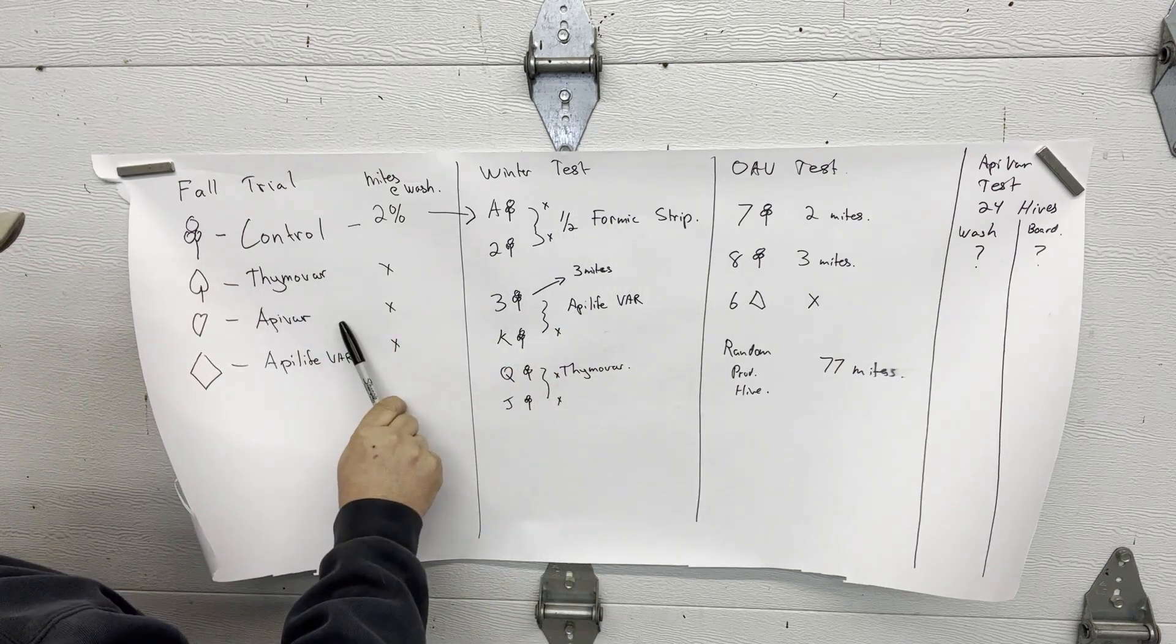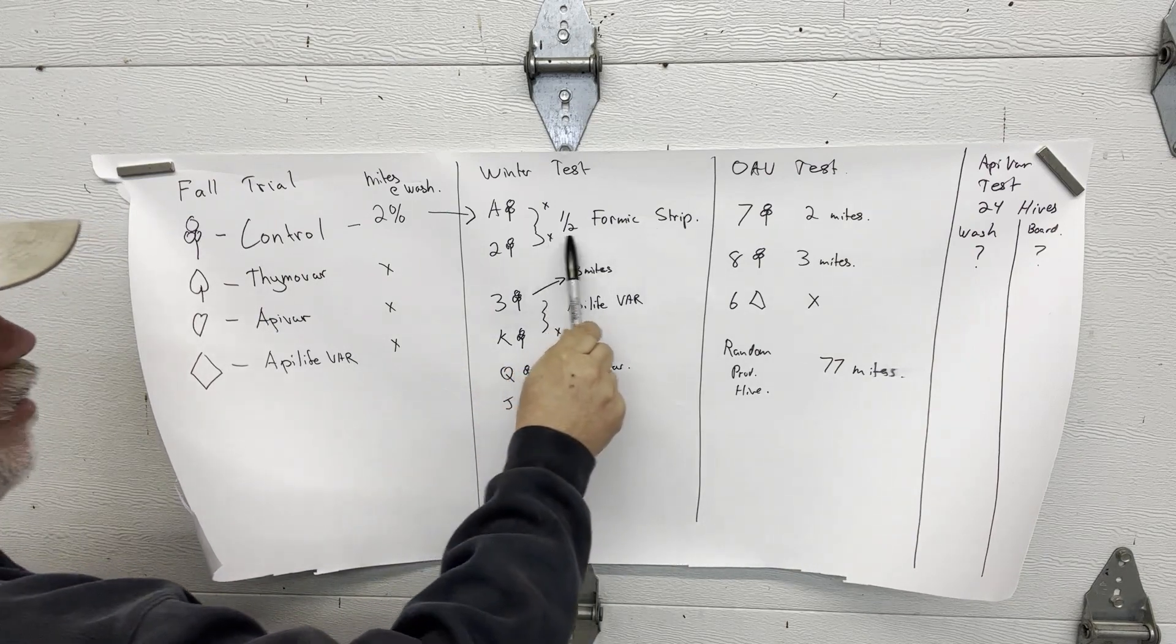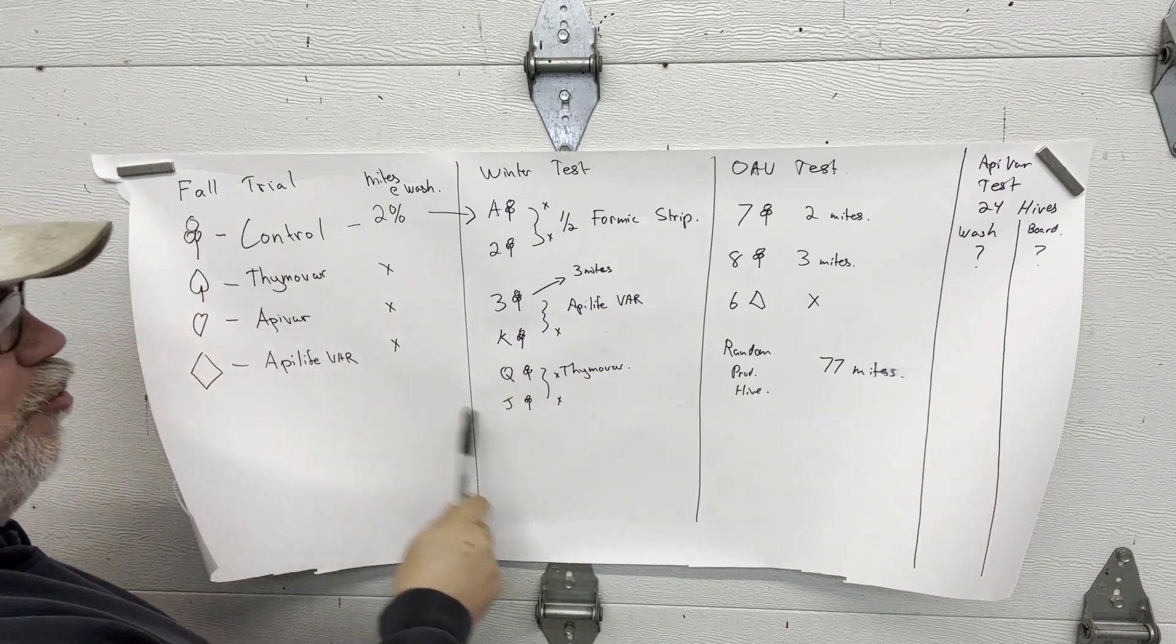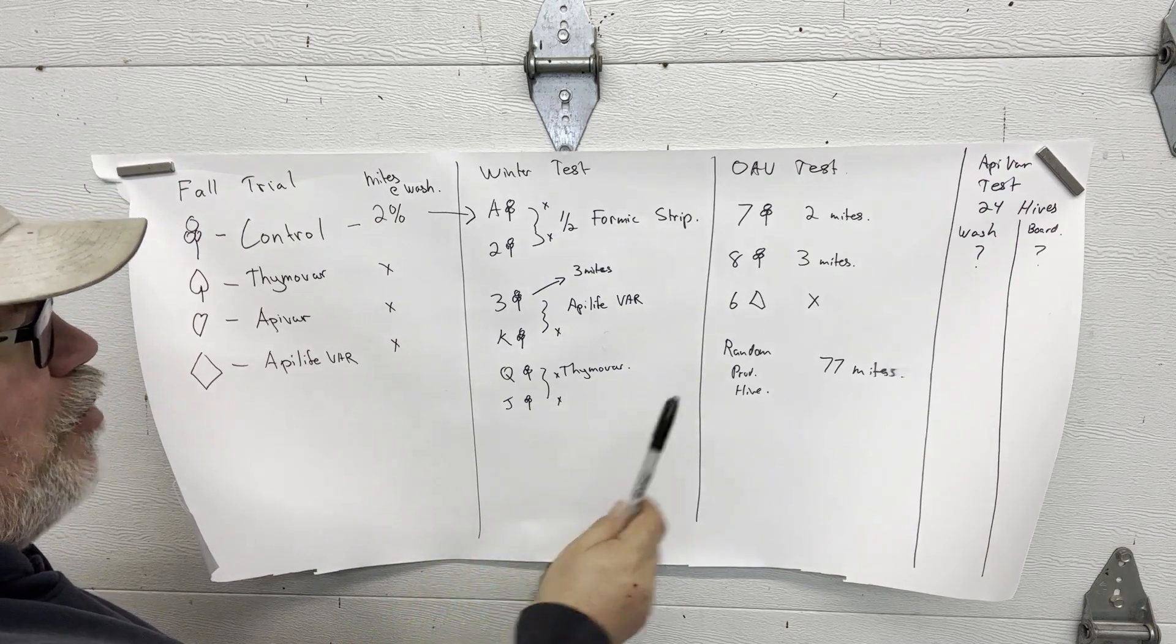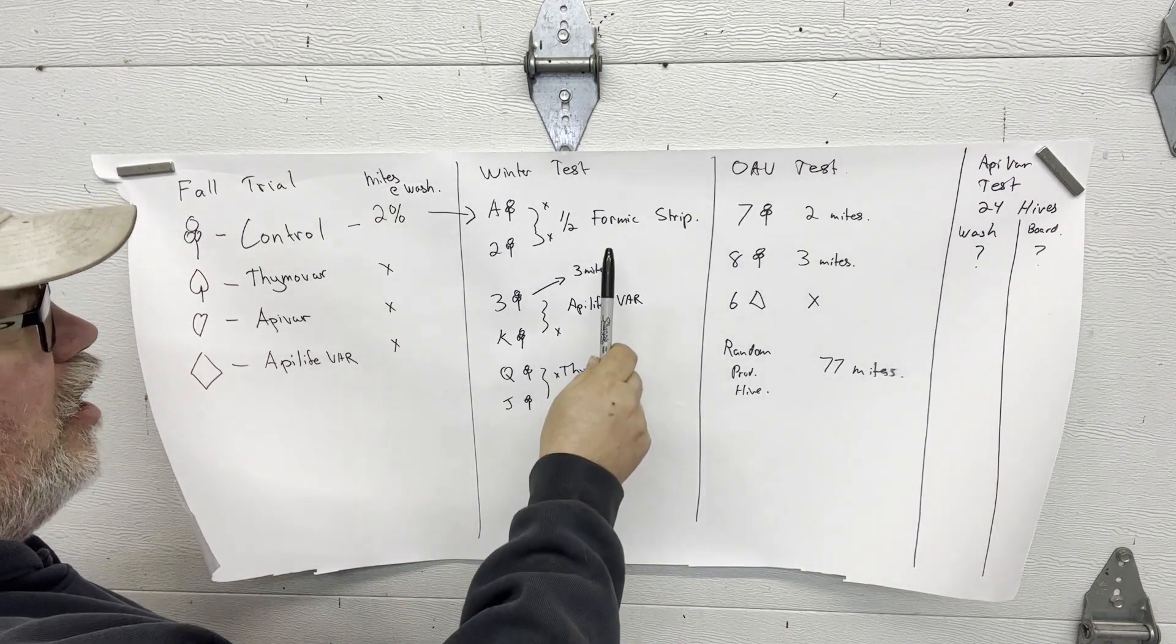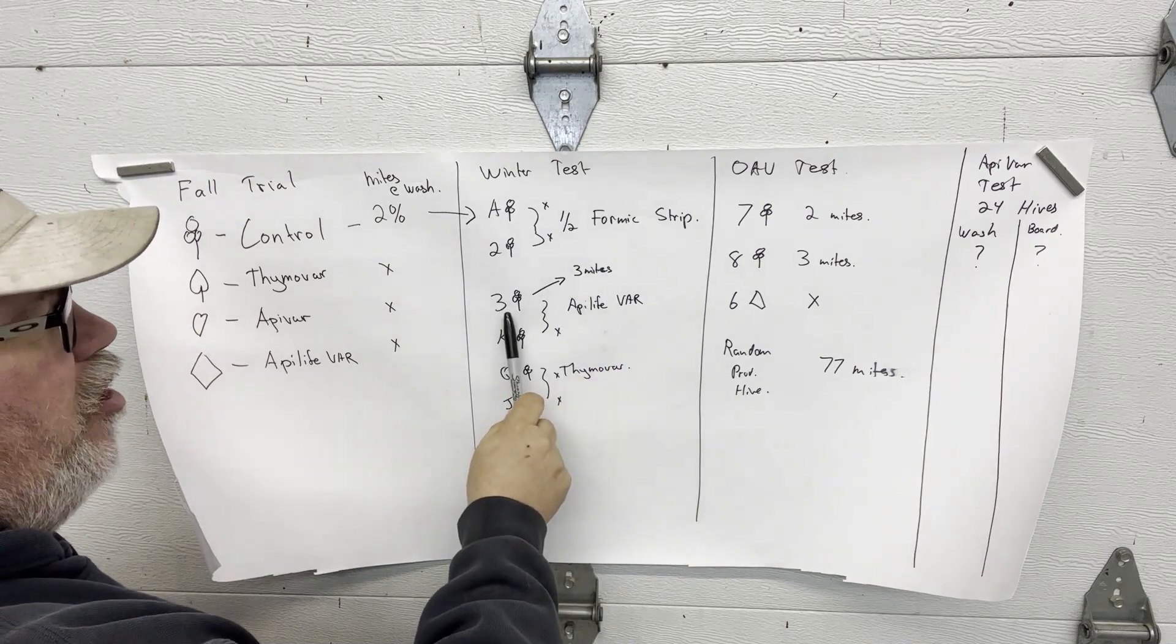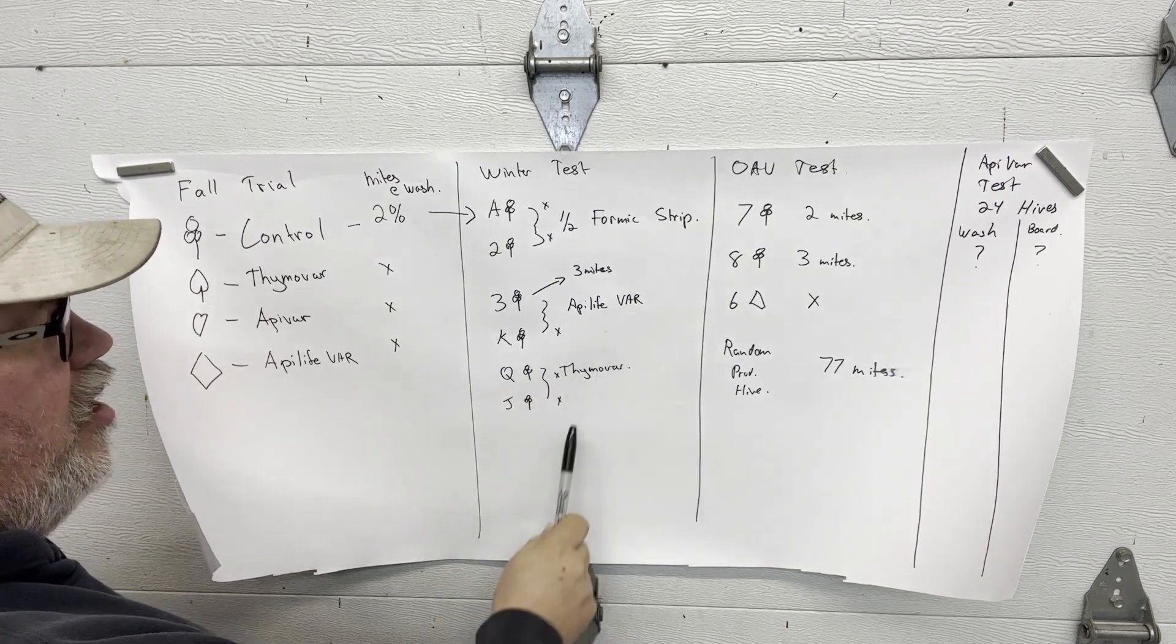That appeared to have worked in the fall, although maybe I should have done more thinking about this, but anyway those were treatments that we thought we had shown to work. And the only result we got - we got three mites on a sticky board for the three of clubs which was the apolite var method. The rest of them we found no mites.